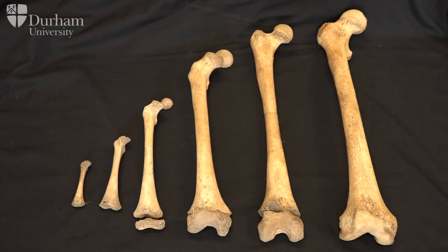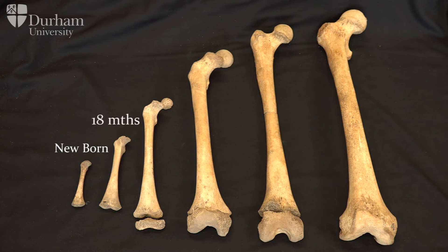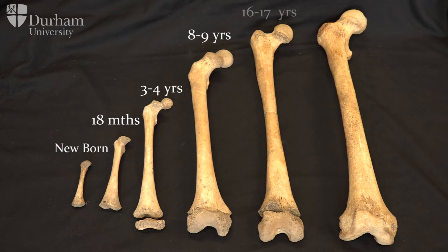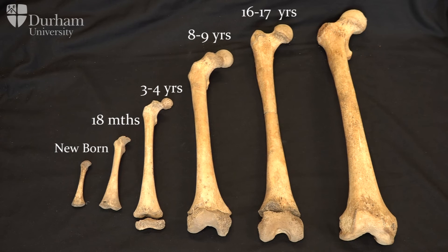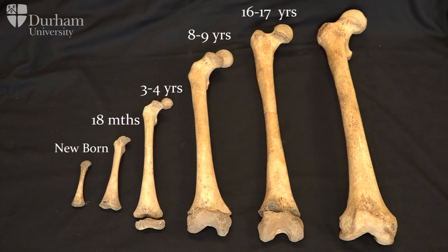The long bones begin to ossify in utero between the 8th and 12th gestational weeks. Diaphysial growth continues to be rapid during the first year, but the rate of growth declines after about three years of age. There are often temporary increases in growth rate between the ages of about six to eight years and then again around puberty. It's important to remember that growth isn't linear and instead occurs in a series of growth spurts followed by periods of stasis. In infant and juvenile skeletal remains we do not know if the individual died during a period of stasis or just after a growth spurt, and this is a source of inaccuracy in the method.